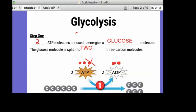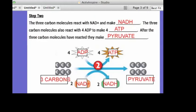Okay, so everyone understands it goes from glucose and then it turns into the three carbon molecule. So step two, the three carbon molecules react with NAD plus and make NADH. The three carbon molecules also react with 4 ADP to make 4 ATP. After the three carbon molecules have reacted, they make pyruvate.